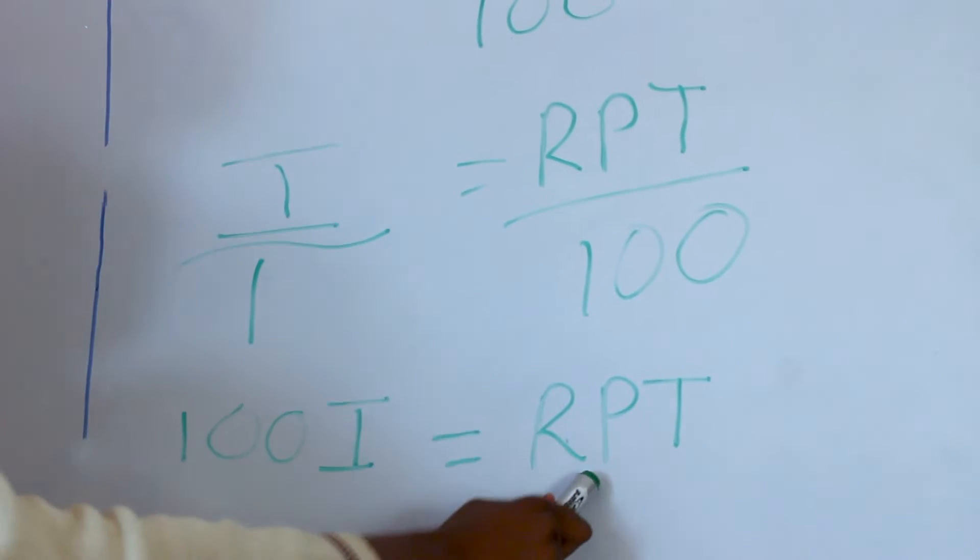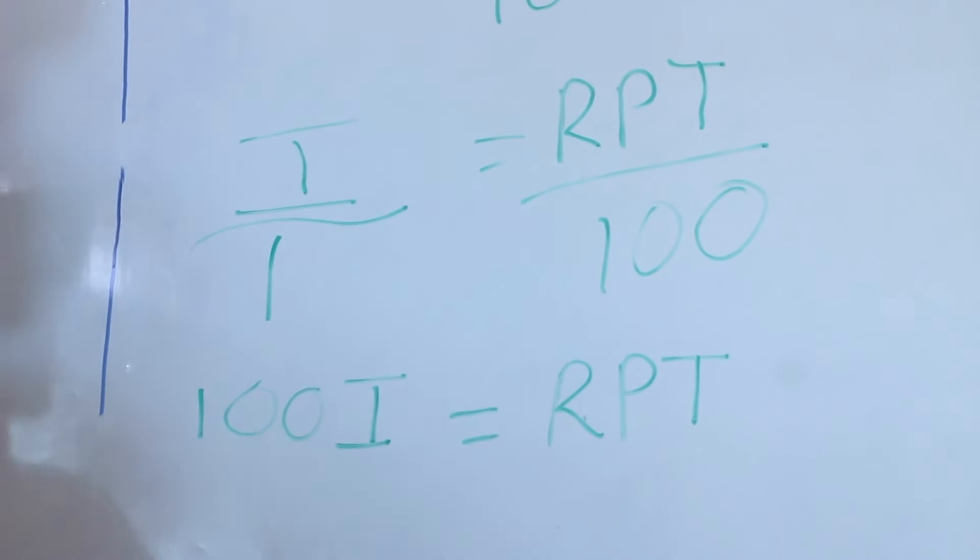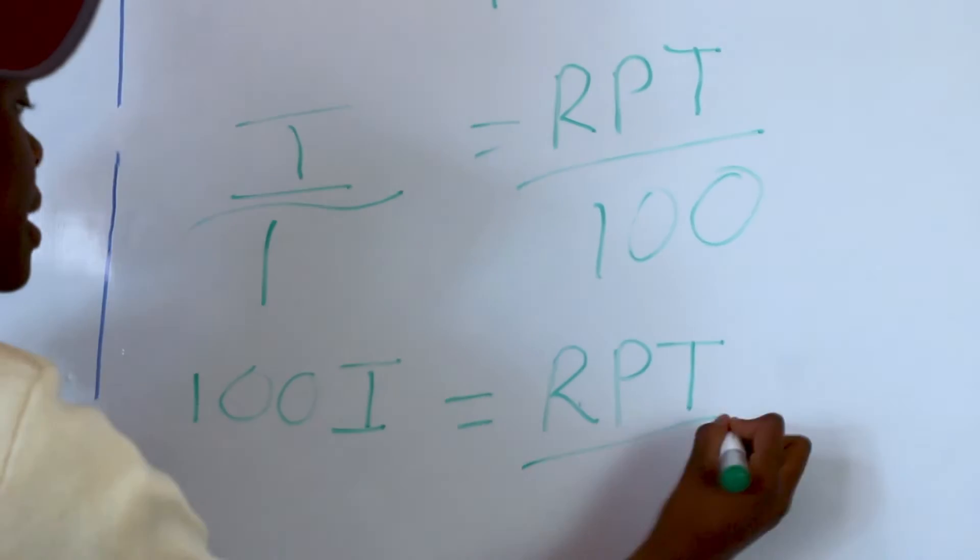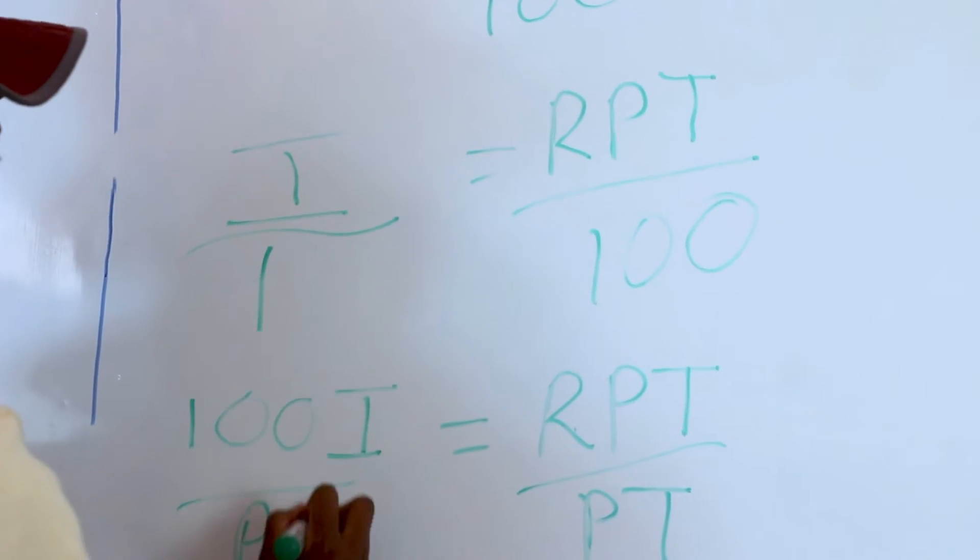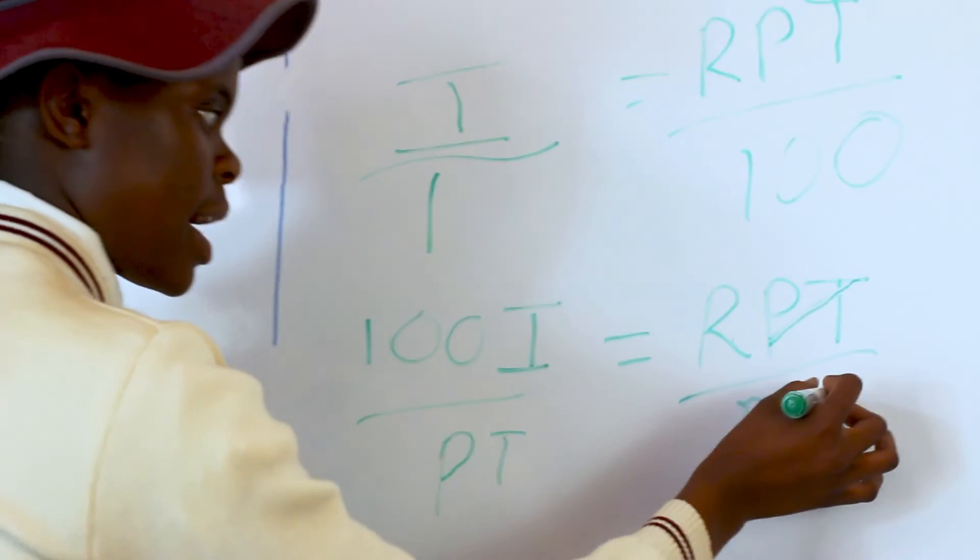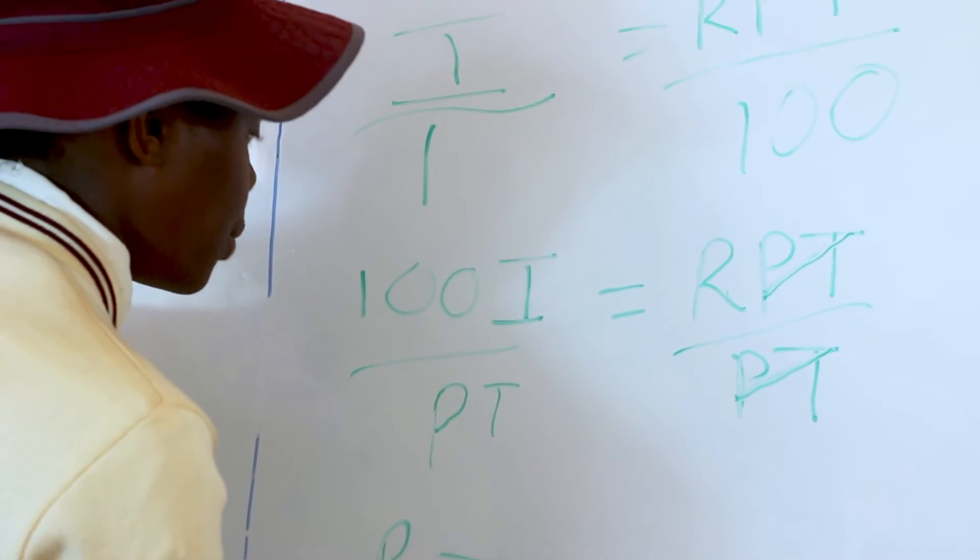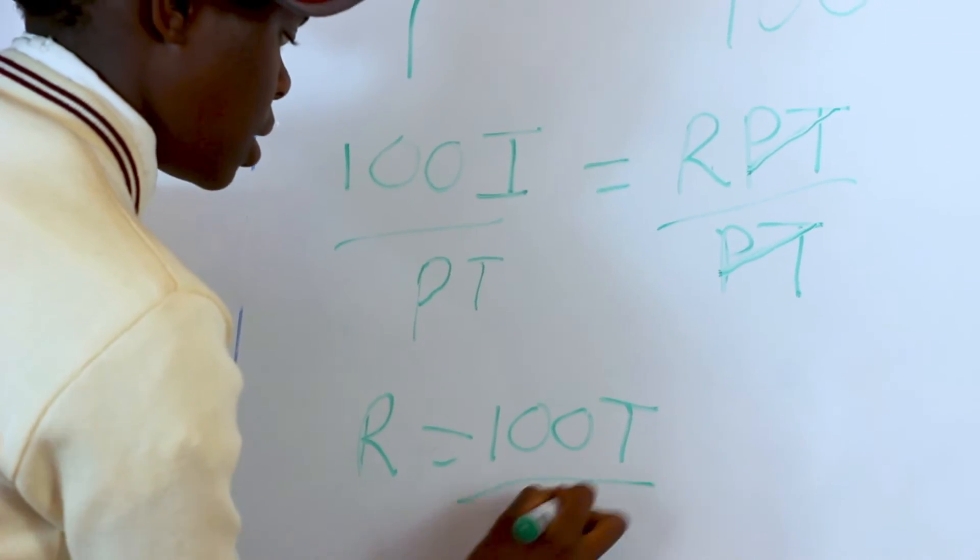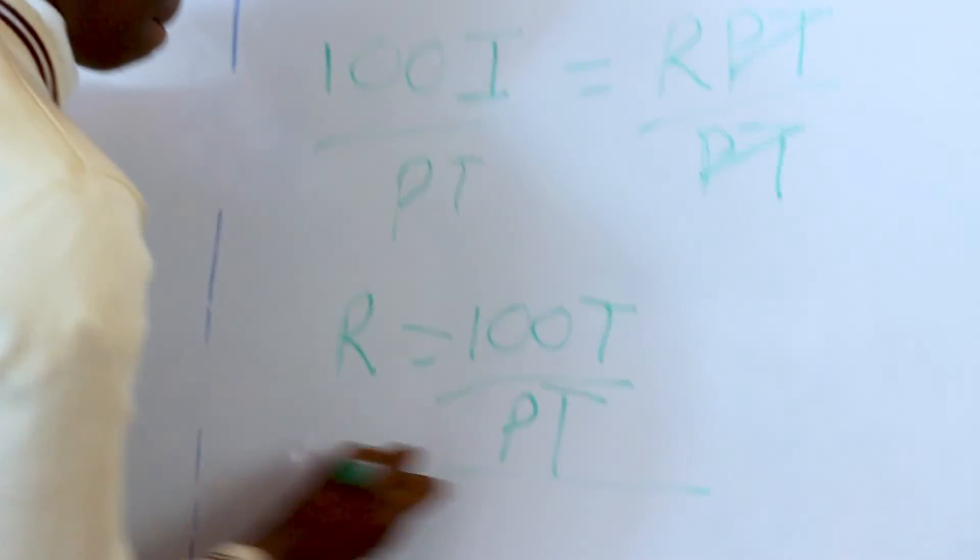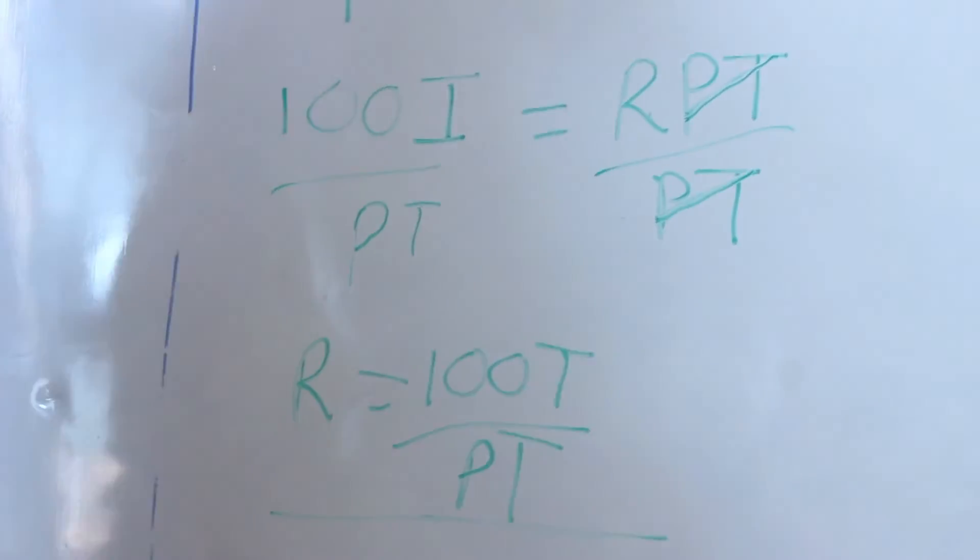Now we need to make R the subject of formula, so we divide with PT both sides. Here we cancel PT this side and this side, and our R will be 100I over PT. I will leave this time to my colleague.